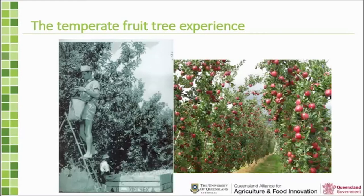The Small Trees initiative is looking at some ideas from temperate fruit tree experience to apply them to tropical and subtropical trees. In apples over the last few decades we've seen a progression from really large trees that are widely spaced — with lots of effort needed to harvest — to modern orchards with small trees, much reduced vegetation, and much higher yields per hectare.